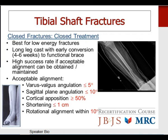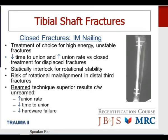Intramedullary nailing has become the treatment of choice for high energy unstable tibial shaft fractures, associated with decreased time to union and increased union rate compared to closed treatment. Tibial nails should be statically locked — both proximally and distally — for rotational stability. There is a risk of rotational malalignment in distal third tibial shaft fractures. Reaming has been associated with increased union rates, decreased time to union, and decreased hardware failure compared to unreamed nailing.